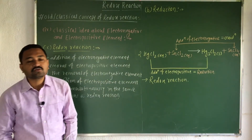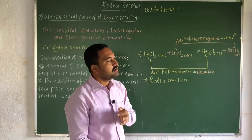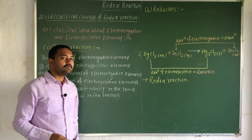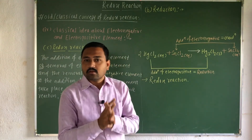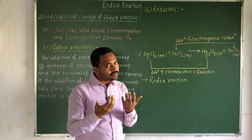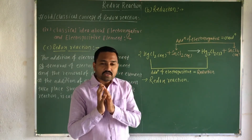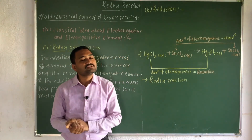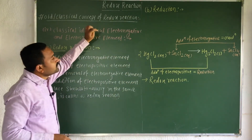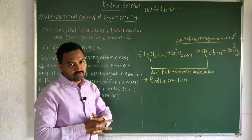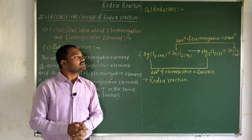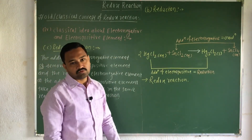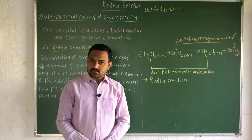So this is about the definitions of oxidation, reduction, and the redox reaction. The importance of this concept is that these definitions are not restricted to any specific atom. There are several electropositive and electronegative elements in the periodic table, so we can identify oxidation, reduction, and redox reactions using the terms electropositive and electronegative elements. This is the last part of the old and classical concept — classical ideas about the electropositive and electronegative elements. Thank you for watching this video.